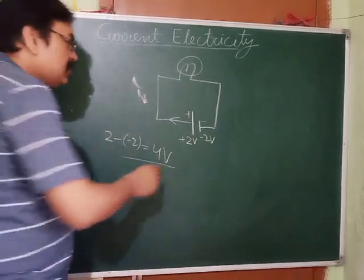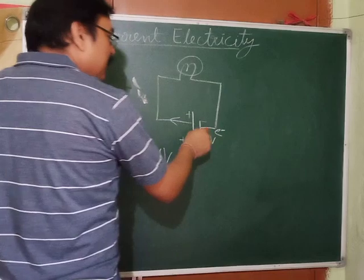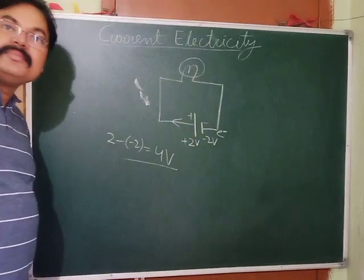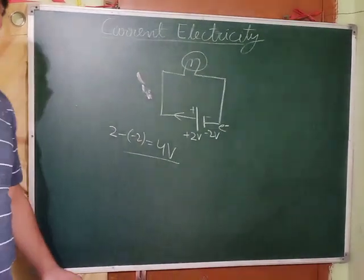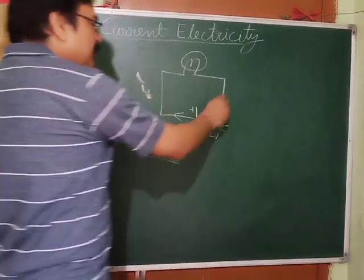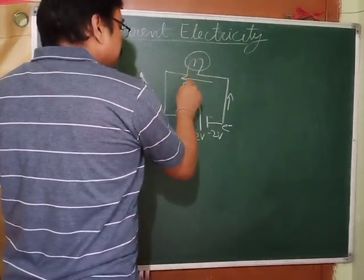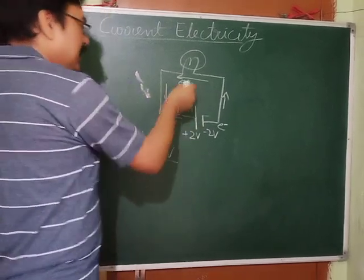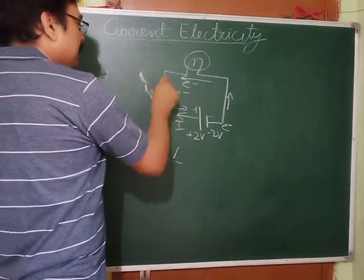Now see the direction of flow of current. Electrons always flow from the negative to the positive terminal, because electrons flow opposite to the direction of the electric field. So electrons flow in one direction while current flows in the opposite direction.